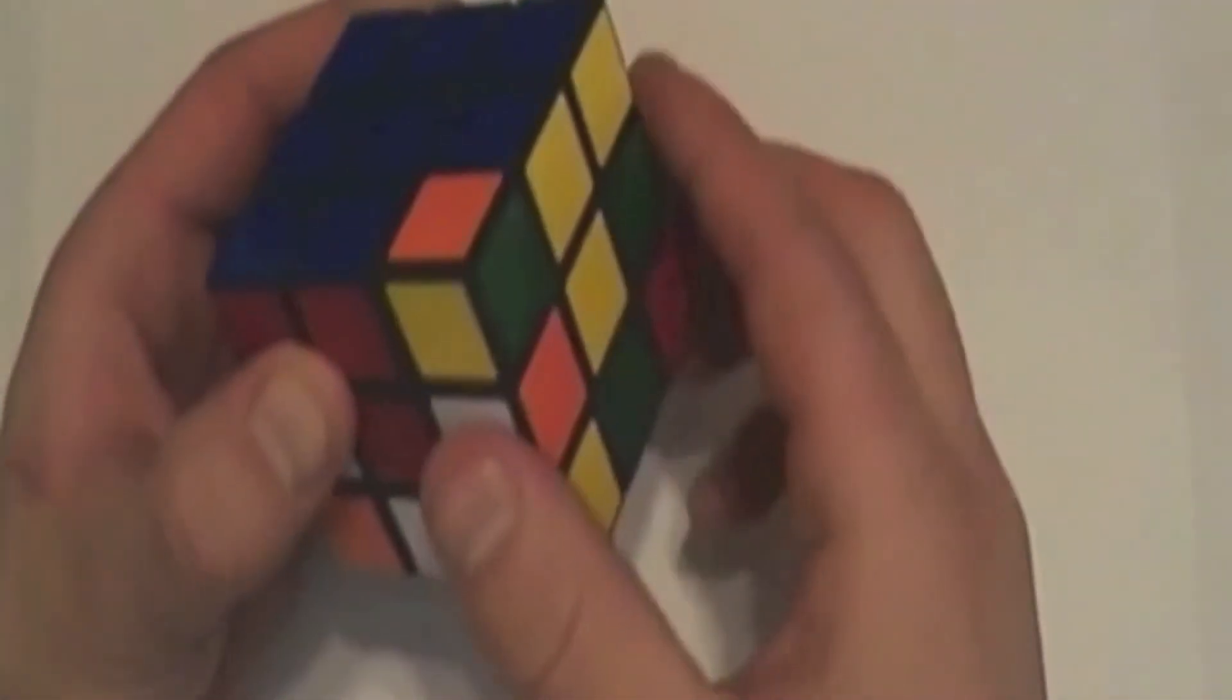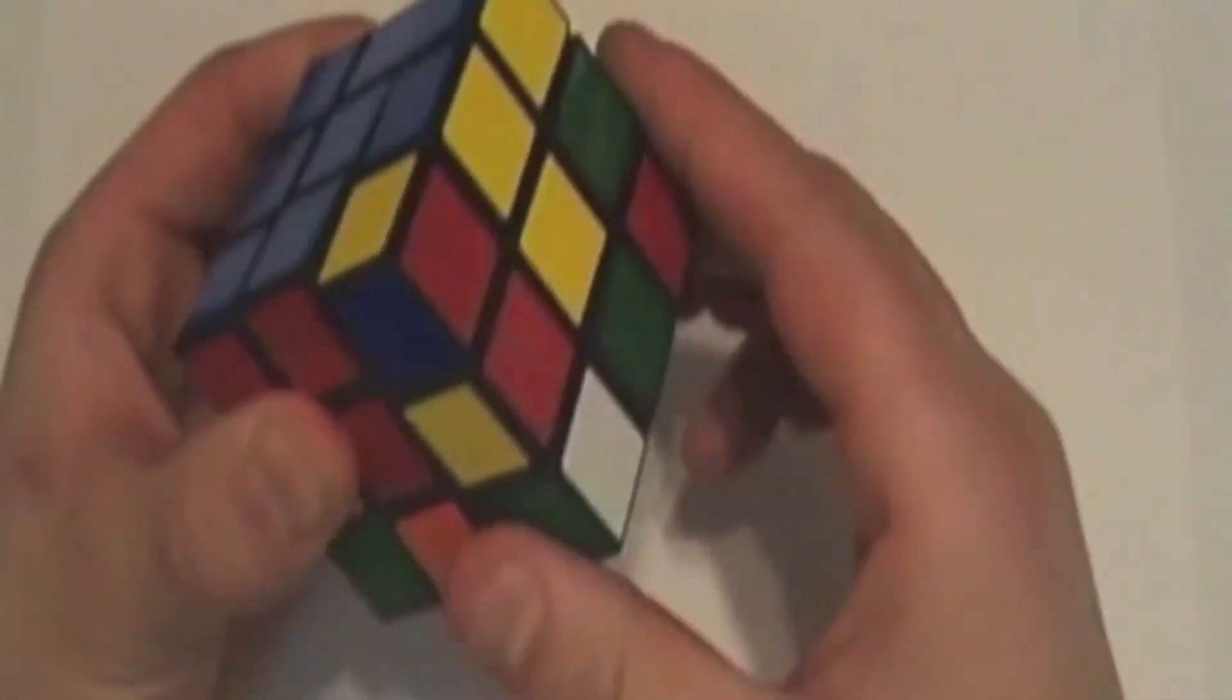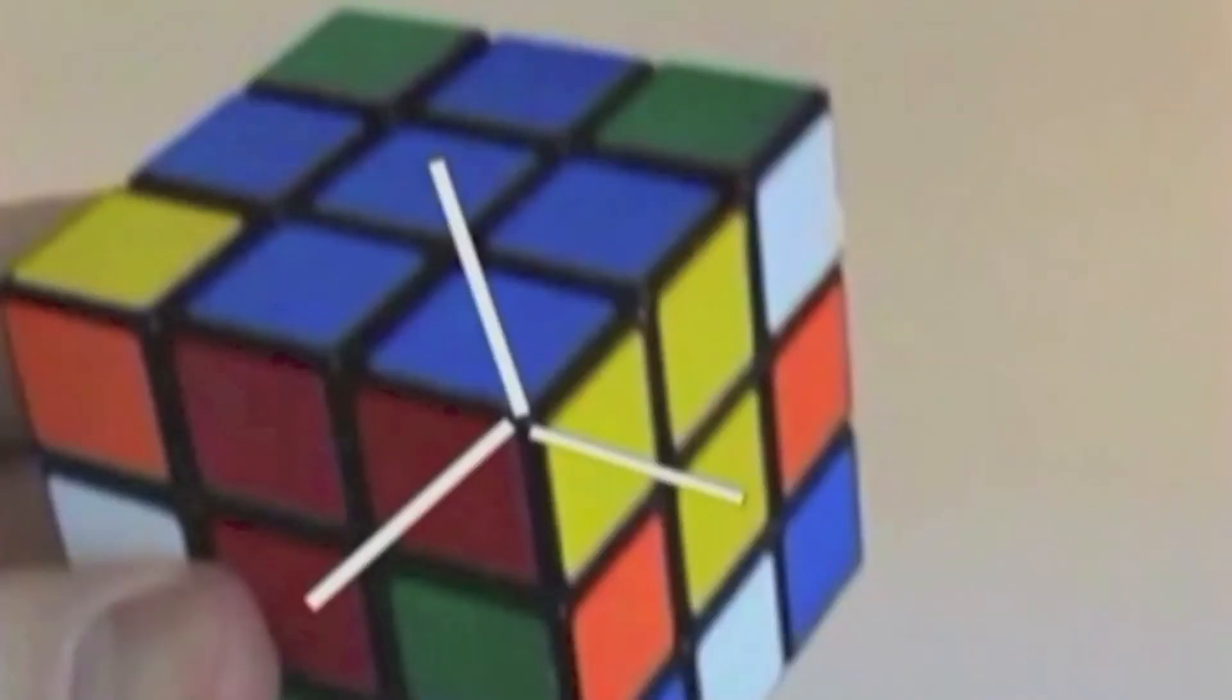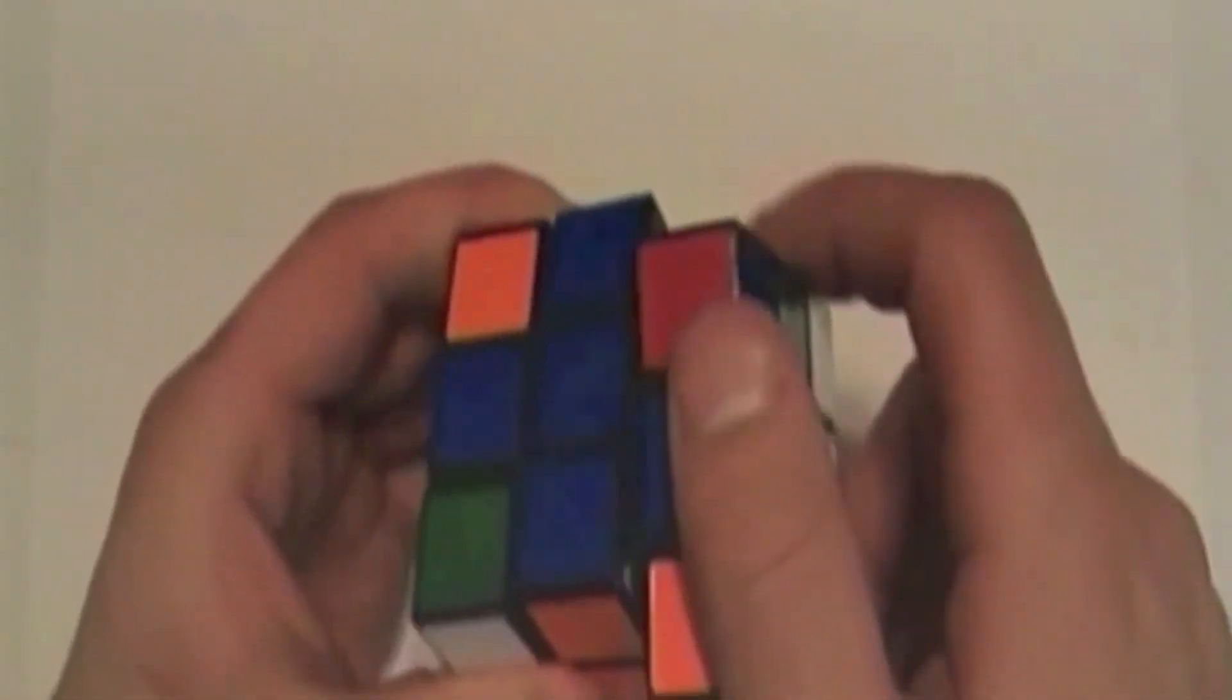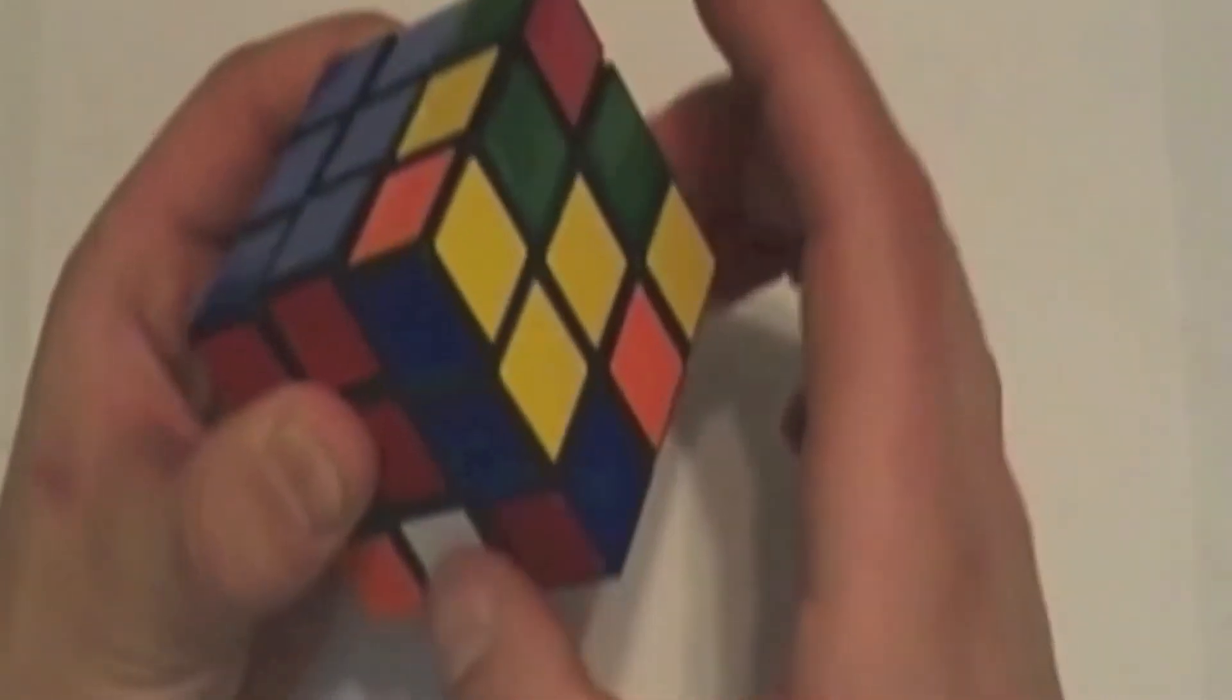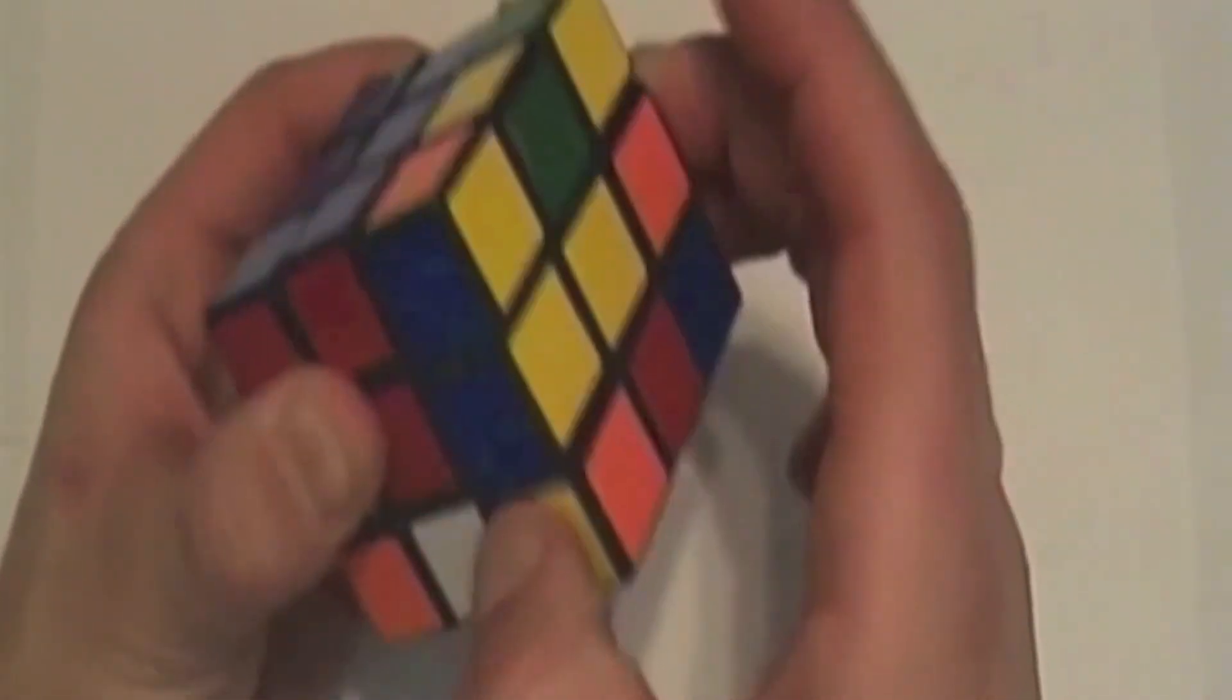We have yellow, blue, and red. We do the pattern once, stop, and look. Twice, stop and look. Three times, stop and look. Four times, stop and look. Five times, stop and look. Six times.